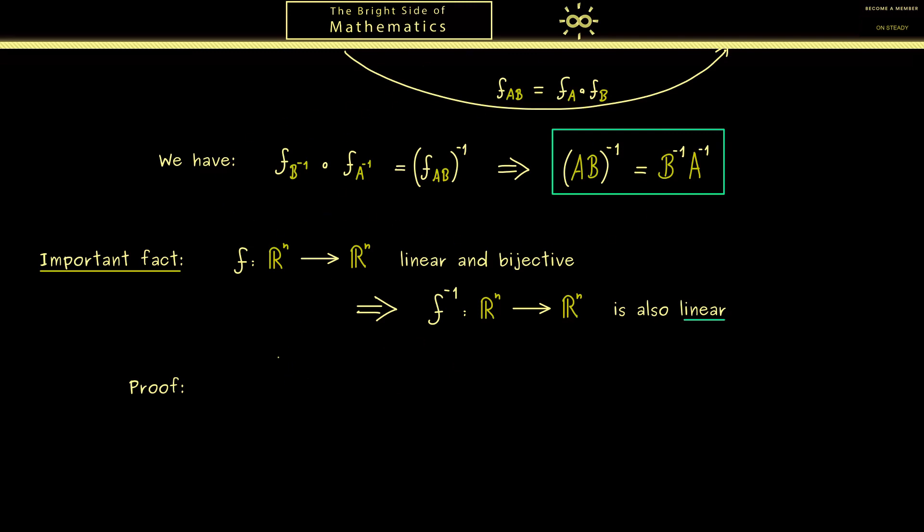However now we want to give an abstract proof of this fact. In other words we have to check what f inverse does to the scalar multiplication and to the vector addition. Therefore let's start with the scalar multiplication.